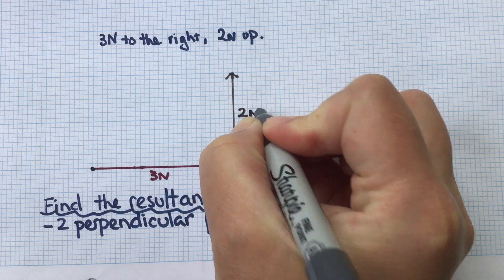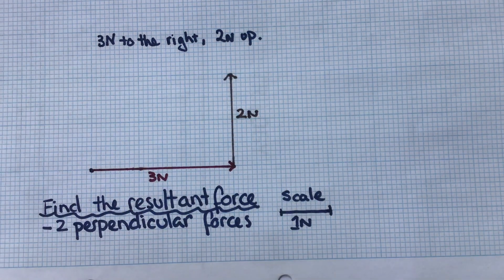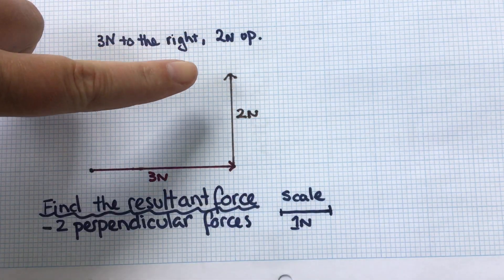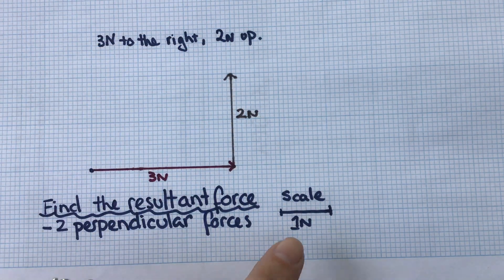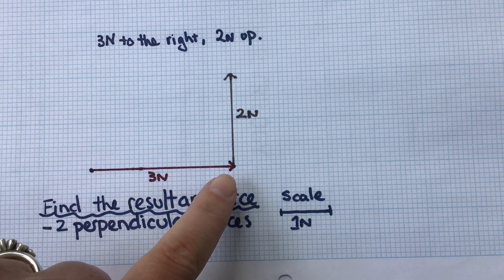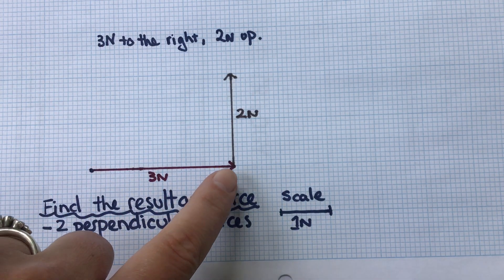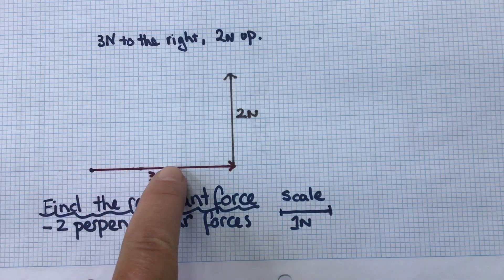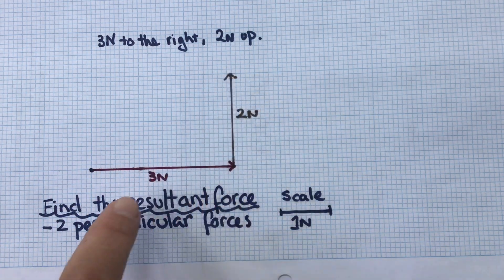I've got my two perpendicular forces: 3 newtons to the right, 2 newtons up. They're drawn in accordance with the scale and I've drawn them so that the tip of one vector arrow meets the tail of the other vector arrow, so that we could trace our finger along following the journey shown by the arrow heads.